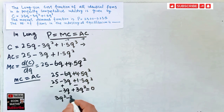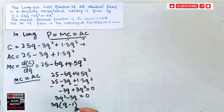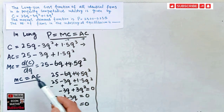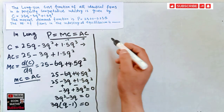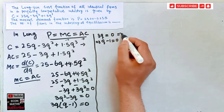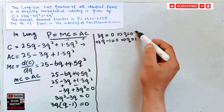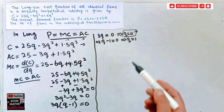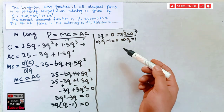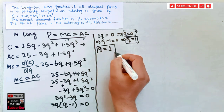So we have 3q² − 3q = 0. Factoring out 3q, we get 3q(q − 1) = 0. This means either 3q = 0, giving q = 0, or q − 1 = 0, giving q = 1. Since in the long run a firm cannot have zero output level, it must produce something. Therefore, the quantity supplied by an individual firm in the long run is q = 1.